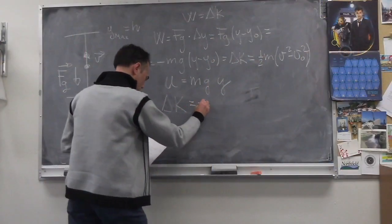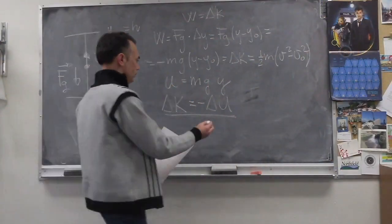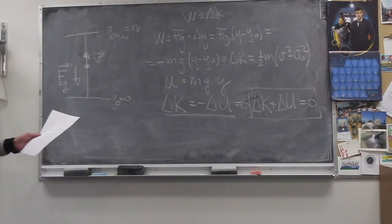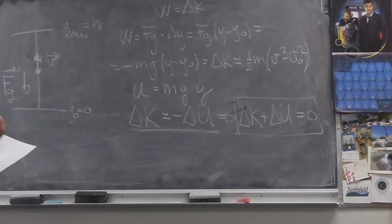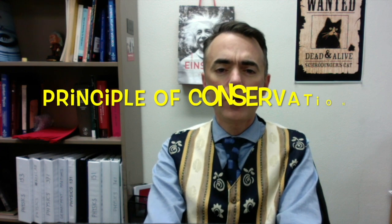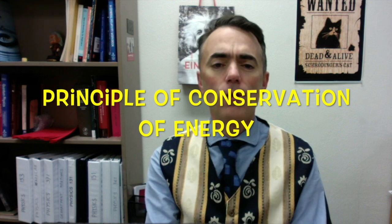If we put both terms of this result on the same side of the equation, we see that the change in kinetic energy plus the change in potential energy is equal to zero. Kinetic energy plus potential energy is conserved in this case. In fact, there is a more general principle — the principle of conservation of energy — which states that energy can be transformed from one kind to another, but it is always conserved.